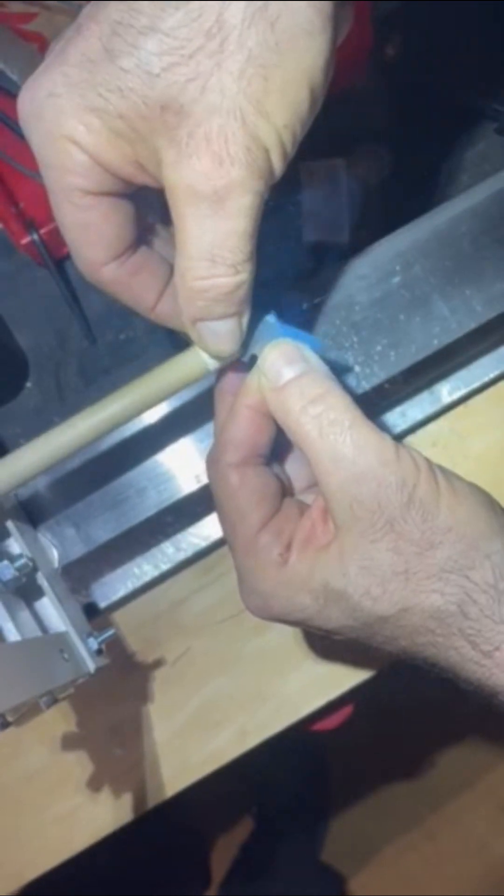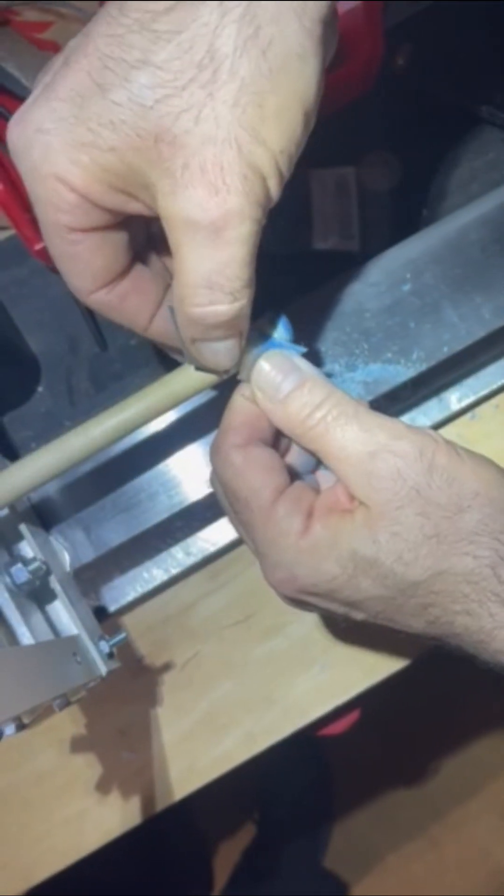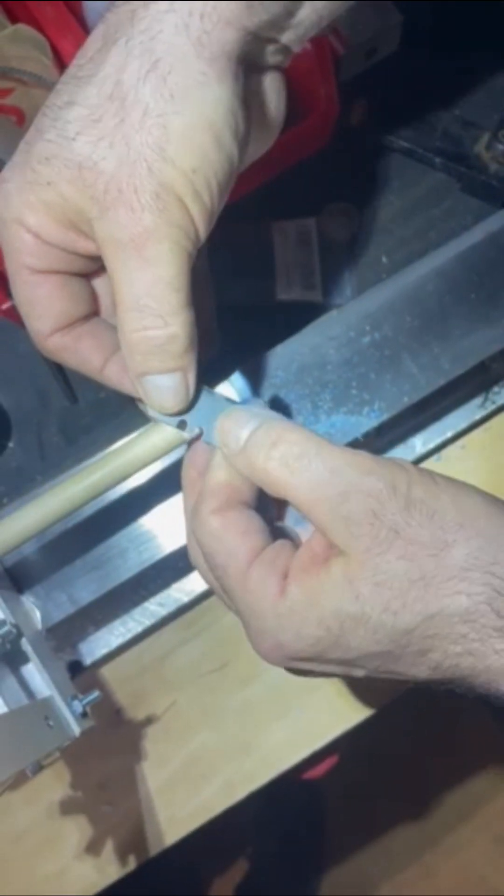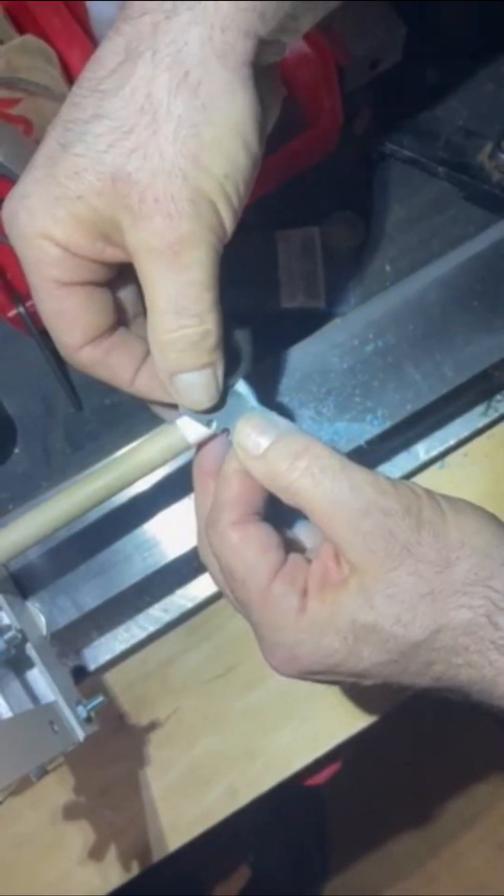It helps to have that material there so you can really work the tip and get it perfectly level with the ferrule. Here he's just removing the bulk and starting to work those fine details now.